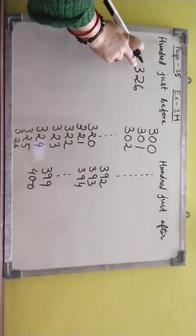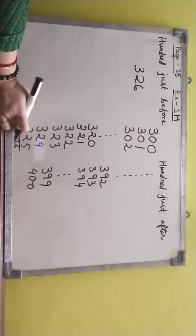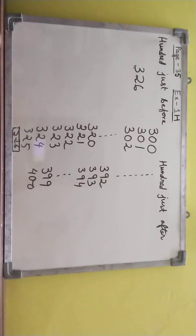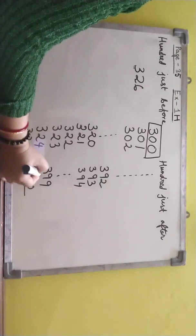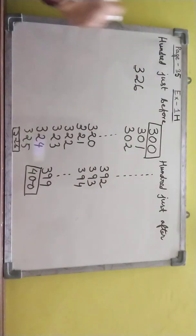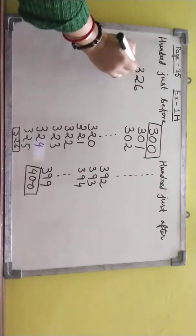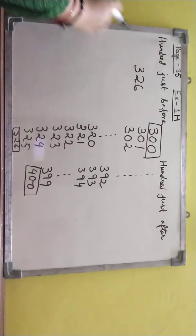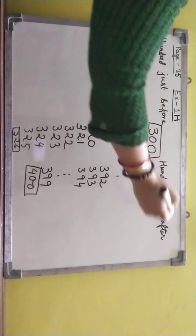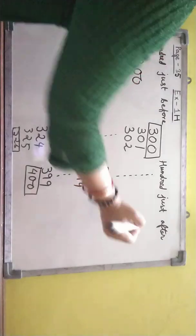So now our number which we have got, this is 326. Now in tens place, ten before, what you have learnt? Just you have to write the first number. This is the first number. And what is the last number? This is the last number, 400. So in that case if you hundred just before of this number you have to write 300. And hundred just after of this number, that is 400.